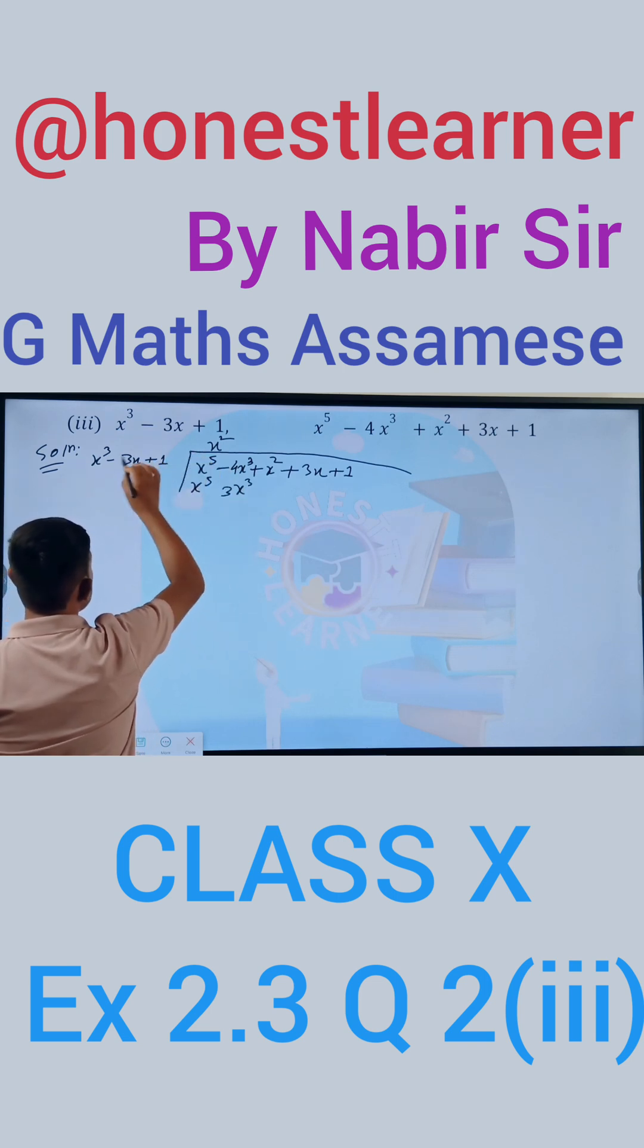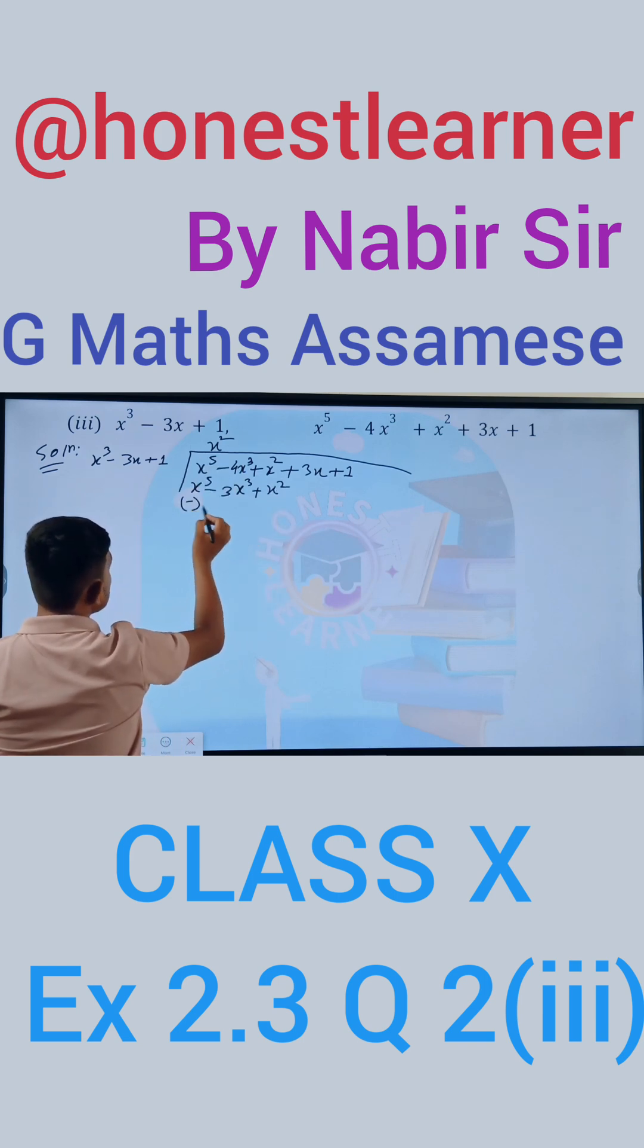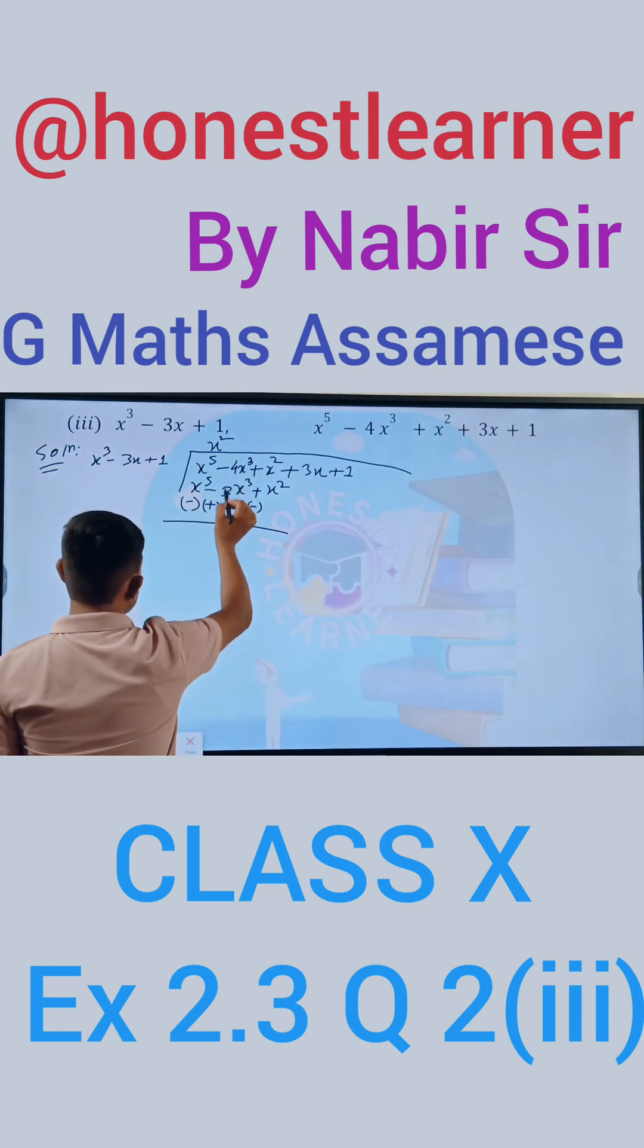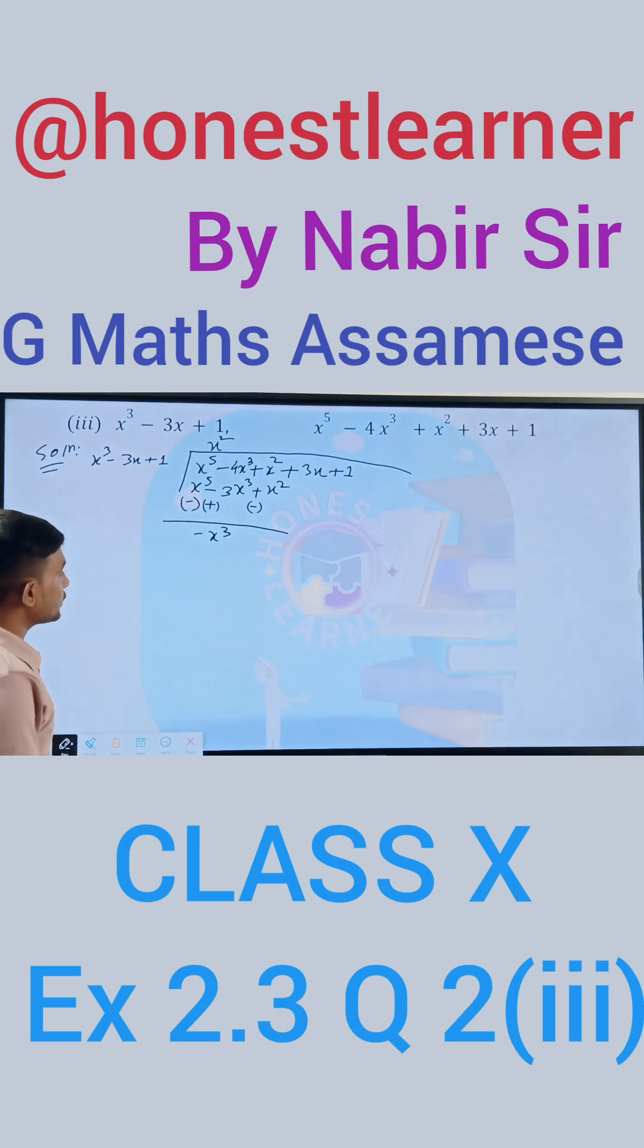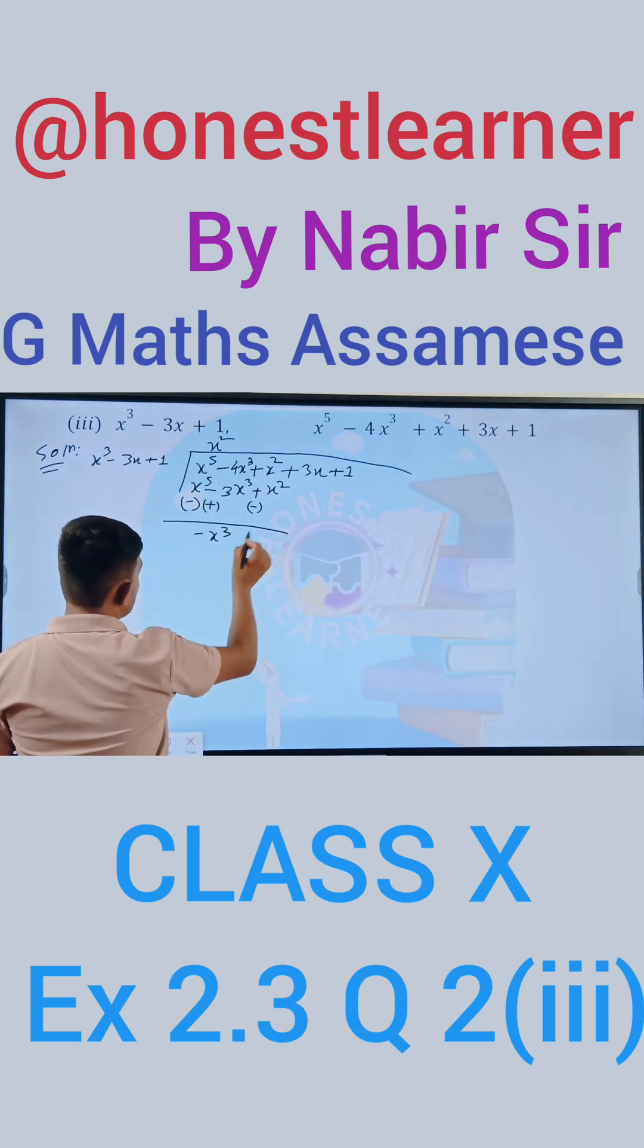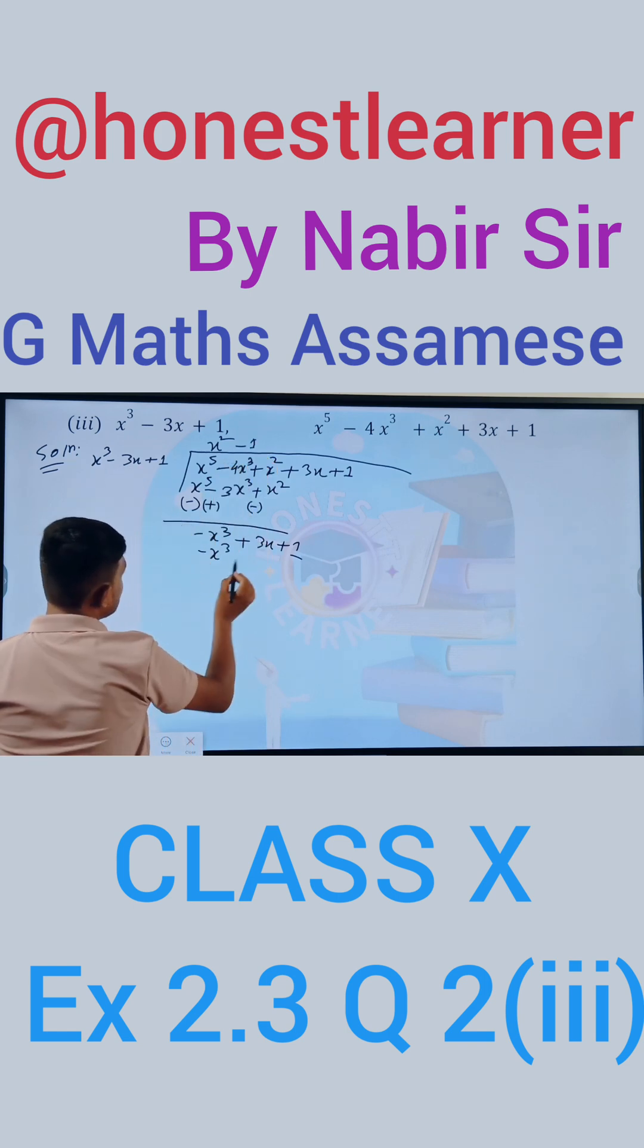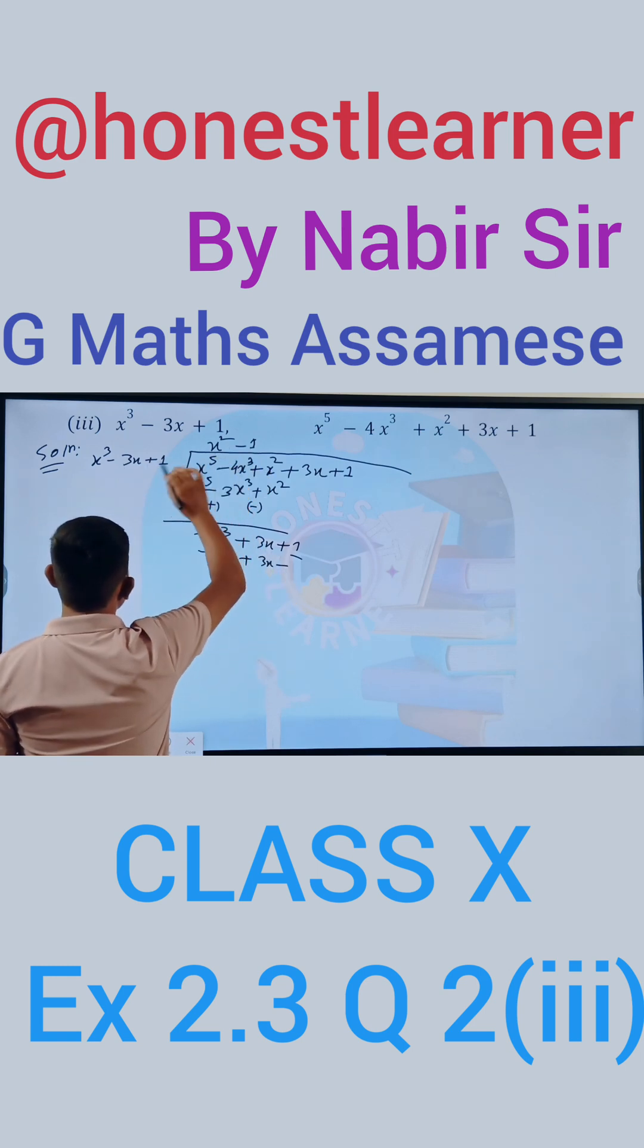1 into 3 is 3. Sign is minus, x squared into 1, sign is plus minus. Plus minus cancel. X to the power 5 minus x to the power 5 cancel, sign is minus. Minus minus is plus, minus plus minus.